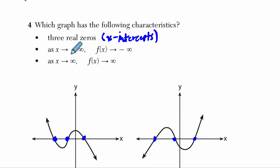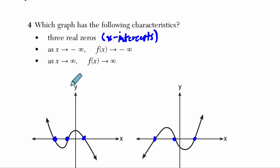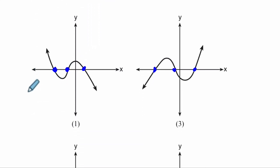This says, as x approaches negative infinity, f(x) approaches negative infinity, and as x approaches positive infinity, f(x) approaches positive infinity. So what does that mean? Well, as x approaches negative infinity, actually let me write this down here.